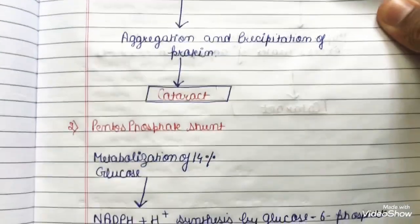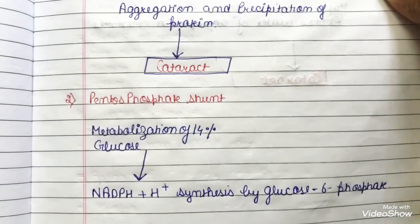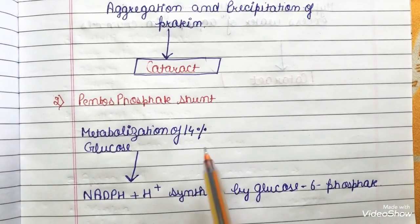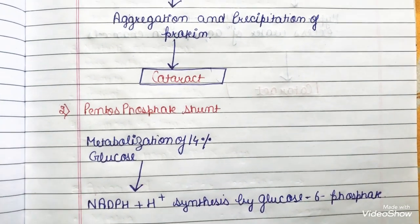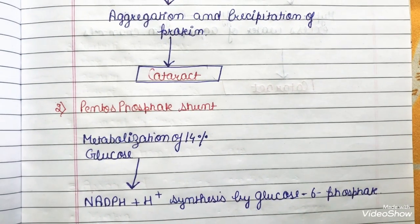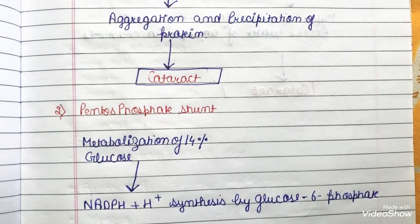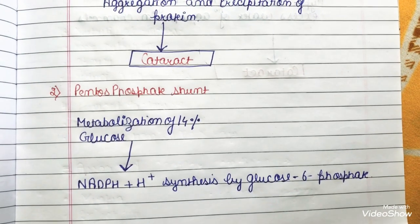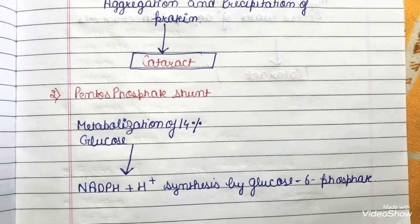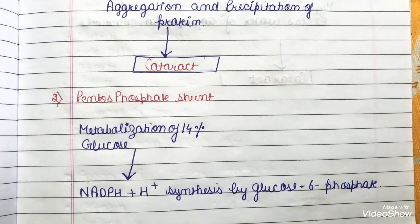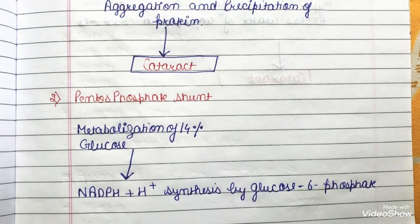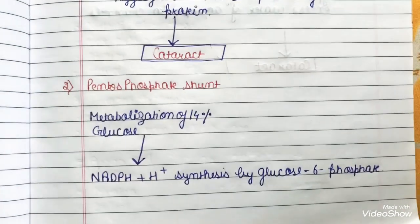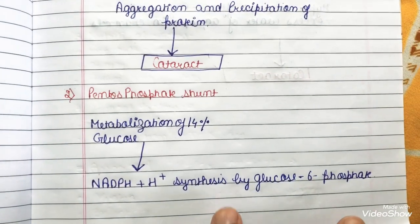The second pathway is the pentose phosphate shunt. It has two steps: first, metabolization of 14% of glucose; and second, NADPH synthesis via glucose-6-phosphate. These are the two steps in this pathway.